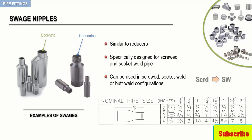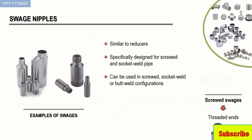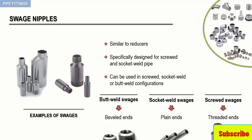The possible configurations are: screwed to socket weld, butt weld to screwed, or butt weld to socket weld. Screwed swages will have threaded ends, socket weld swages will have plain ends, and butt weld swages will have beveled ends.